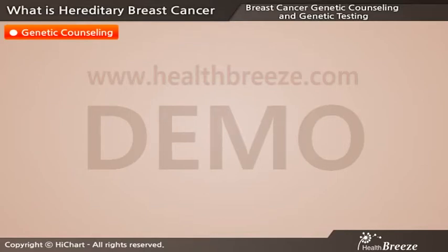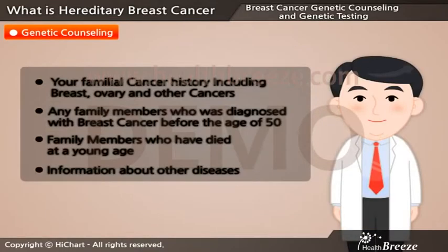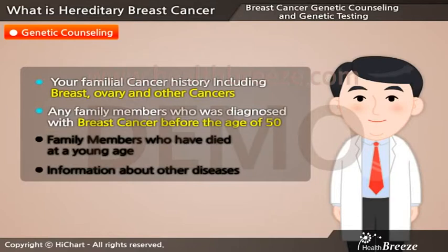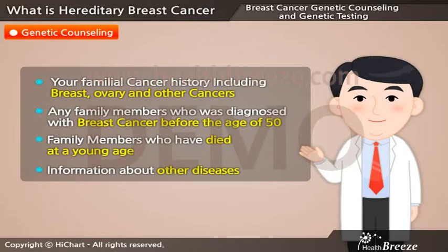Genetic counseling. For accurate counseling, we require the familial cancer history of at least three generations. You may be asked to talk about details of your familial cancer history, including breast, ovary, and other cancers, and any family members who were diagnosed with breast cancer before the age of 50. We encourage you to share as much information about your family health as possible, especially family members who have died at a young age, and information about other diseases.